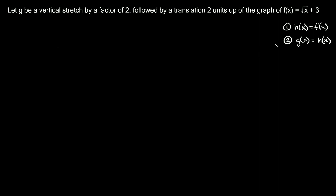The second step would just be saying g of x is equal to h of x transformed. I know that might sound super vague right now, but I'm going to show you exactly how to do it. If you need a quick refresher on all the different types of transformations of radical functions, I'll link a video in the card above, because I'm going to go over them kind of quickly in this video.